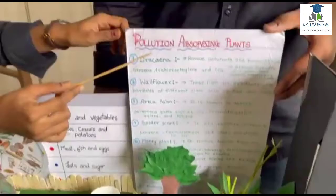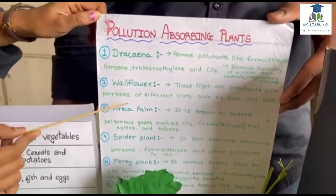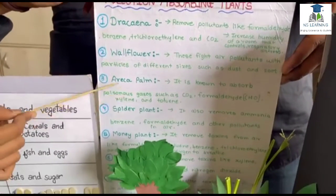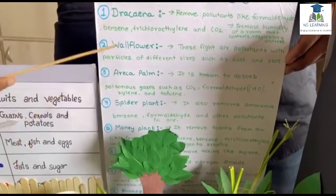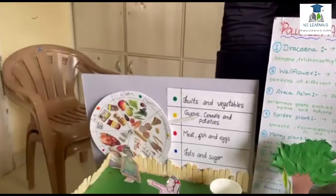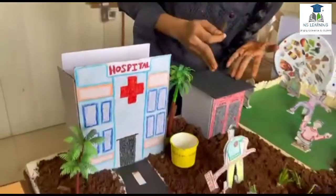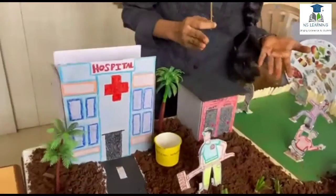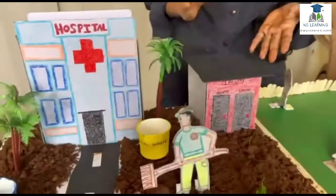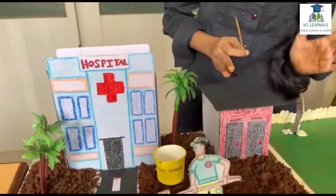These are the pollutant absorbing plants like dracaena, wallflower, erica, and many more. There are also hospitals and separate toilets for ladies and gents, which should be maintained in a clean manner.